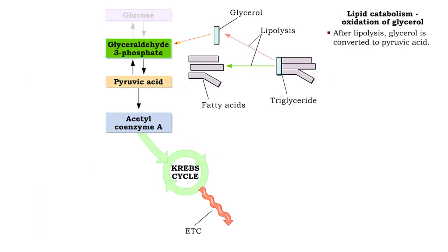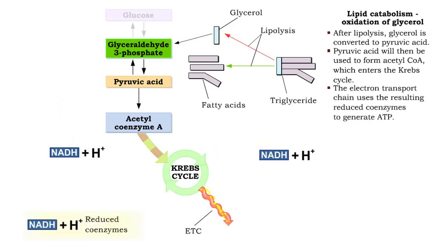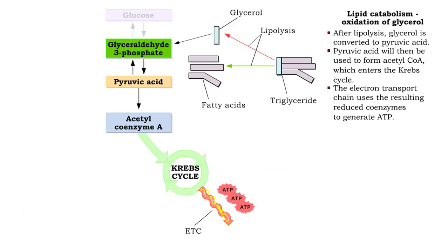After lipolysis, glycerol is converted to pyruvic acid. Pyruvic acid is then used to form acetyl coenzyme A, which enters the Krebs cycle. The resulting reduced coenzymes produced are then used to generate ATP in the electron transport chain.